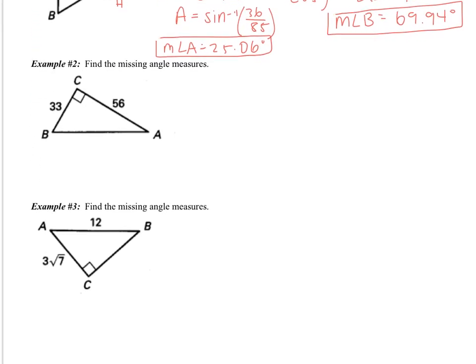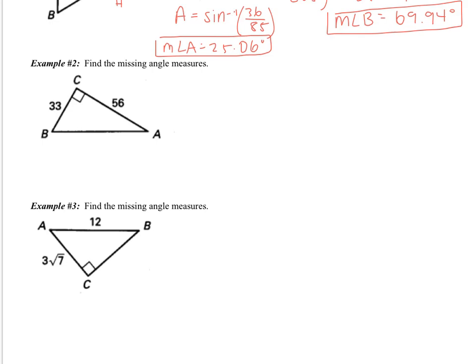Looking at example number 2, it says again find the missing angle measures. So again, angle C is 90 degrees and we have to find A and B. I'm going to start by labeling my sides. I have the side across from angle A, which is going to be the opposite side. This side right here is going to be the hypotenuse, and then I have the adjacent side. Now, if I have the opposite and the adjacent sides, that's going to be tangent. So I get the tangent of angle A equals 33 over 56.